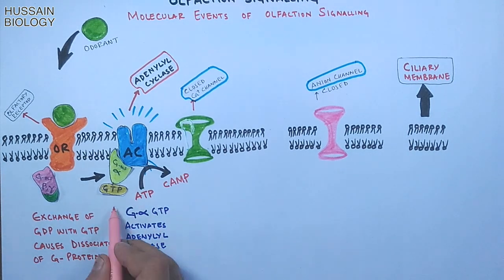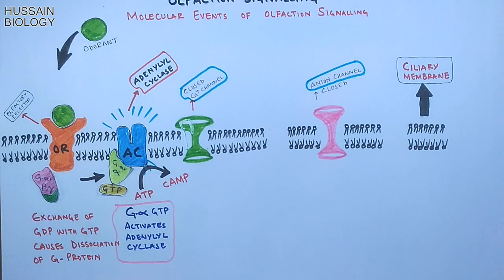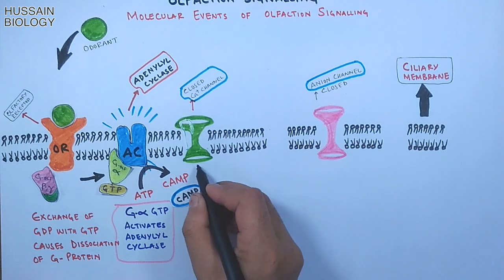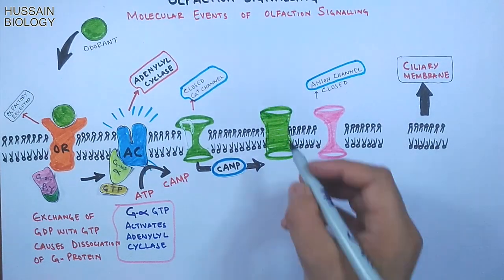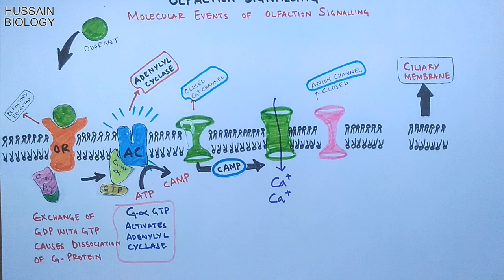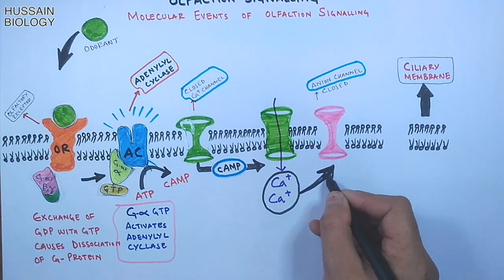This cyclic AMP or cAMP gets to the calcium channel where cAMP-gated calcium channels are opened, thus increasing the intracellular concentration of calcium ions. Furthermore, calcium ions have a positive effect on chloride channels or anion channels.